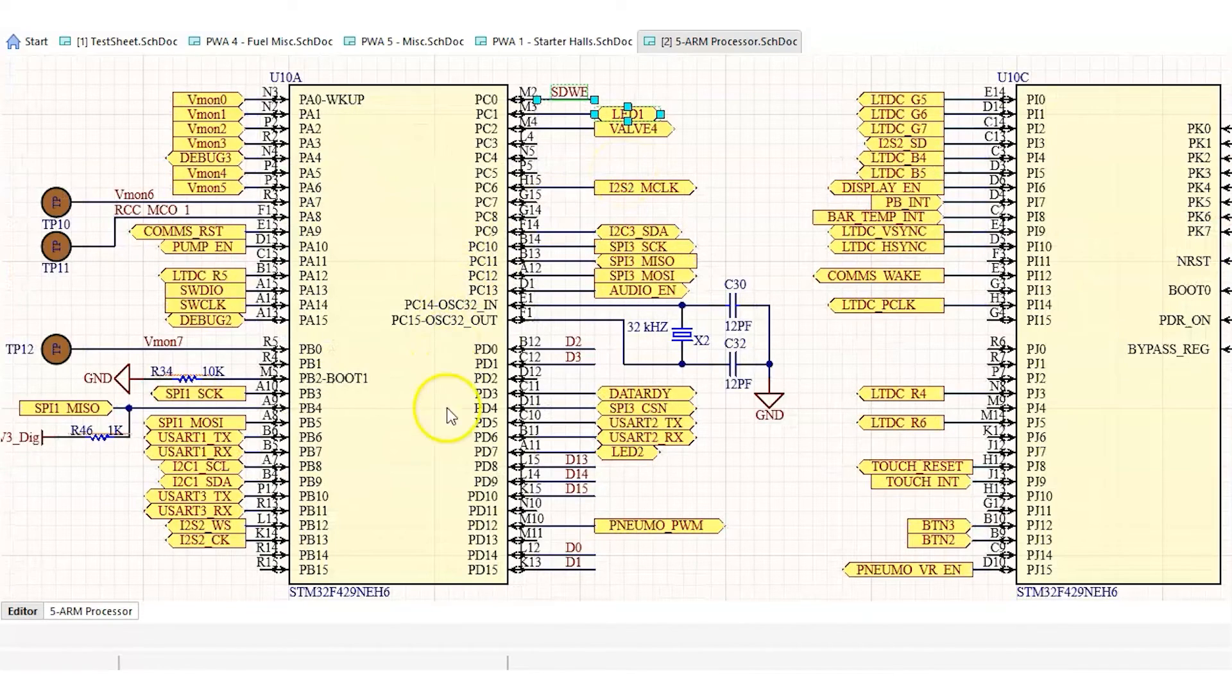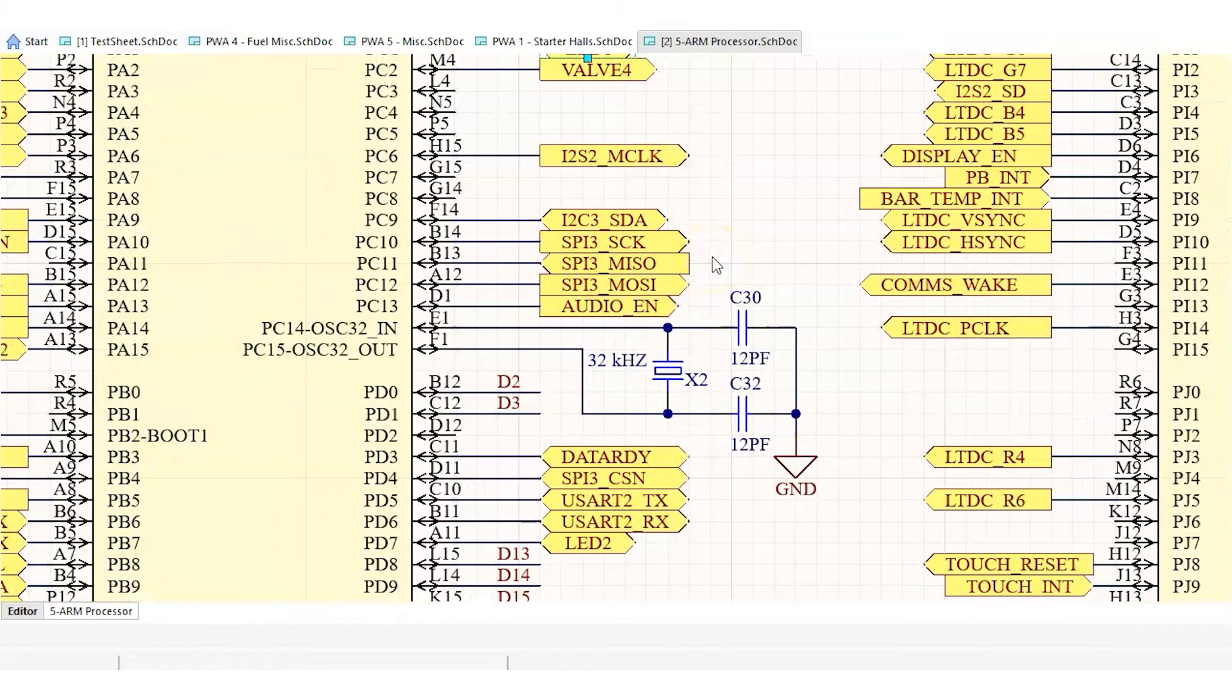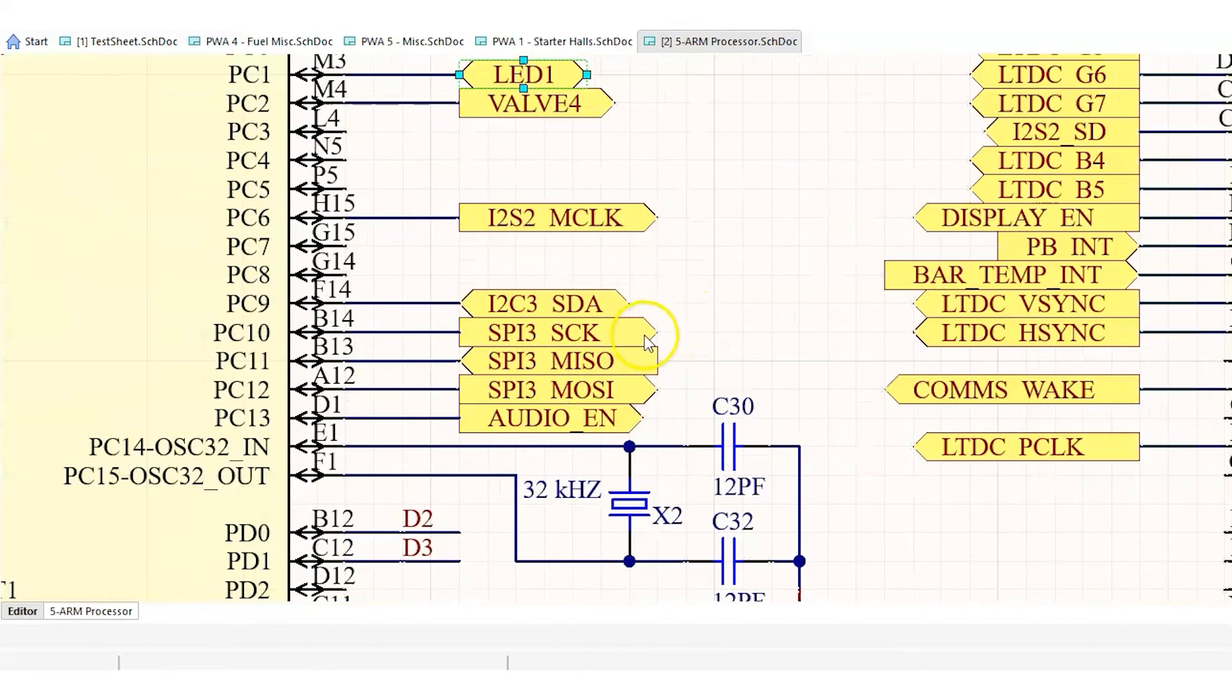Take a look at the schematic symbol for this STM32 microcontroller. This microcontroller has a lot of pins on it. Here you can see I can easily call out the different connections in my SPI bus on pins B14, B13, and A12.